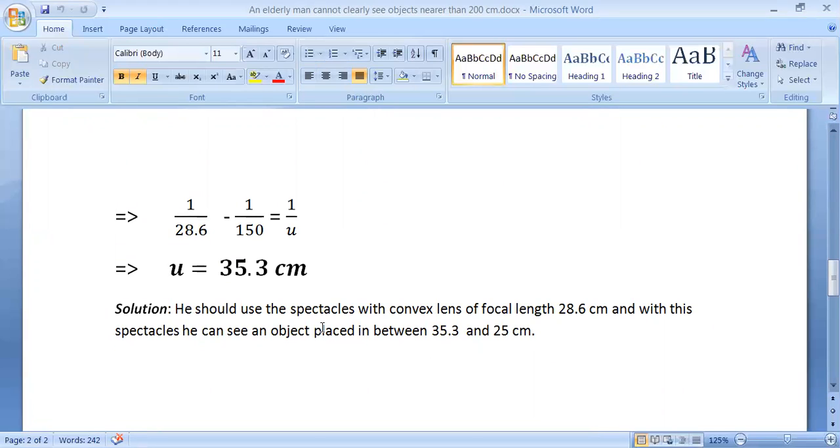So if you use the spectacles with a convex lens of focal length 28.6 centimeters, then within this range between 35.3 and 25 centimeters, you'll be able to view an object. Thank you.